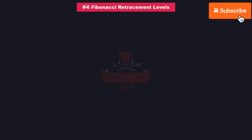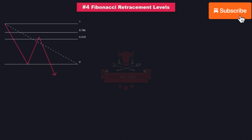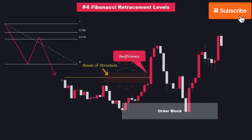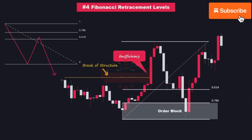Number 4 is Fibonacci Retracement Levels. Fibonacci Retracement Levels are popular among traders for identifying potential reversal points. Inducement may occur at these retracement levels to deceive traders into taking positions before a price reversal. As you can see in this chart, the price has formed a bullish break of structure by breaking above the previous higher high, leaving an inefficiency behind. By adding the Fibonacci Retracement Tool, we can see that the price initially reacted slightly at a commonly used retracement level. However, it quickly reversed and pushed downwards, triggering the stop-losses of traders who had entered long positions based on the retracement levels. The price then tapped into the extreme order block and reversed its direction, moving back up again.